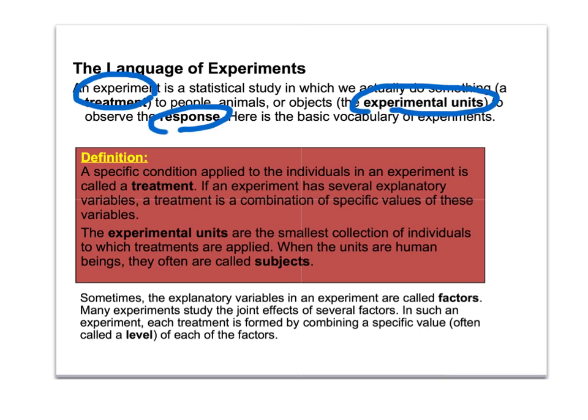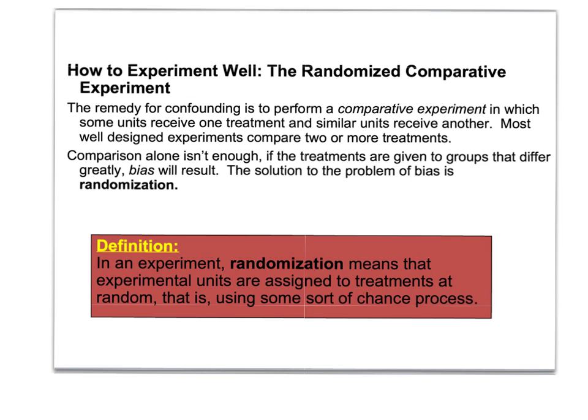But it doesn't have to be humans. You can do experimental units on an amoeba, or on a plant, or something else of that nature. That gives you an idea of what an experiment is and some of the more technical terms. When you do an experiment, you may have what's called confounding variables.